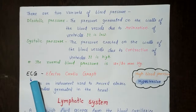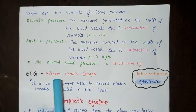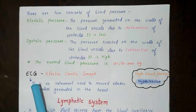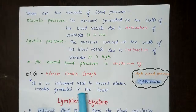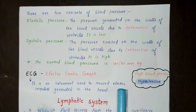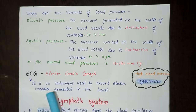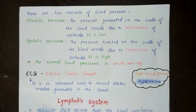The next term is ECG, which stands for electrocardiograph. ECG is used to record electrical impulses generated in the heart, and it is used in diagnosing different heart diseases.